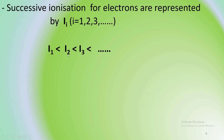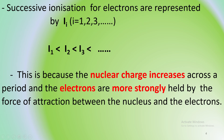We have the first ionization energy, the second ionization energy, and the third ionization energy. This is because of the nuclear charge. The first, second, and third ionization energies each require progressively more energy to remove successive electrons.